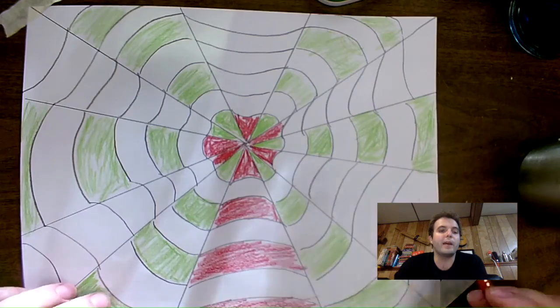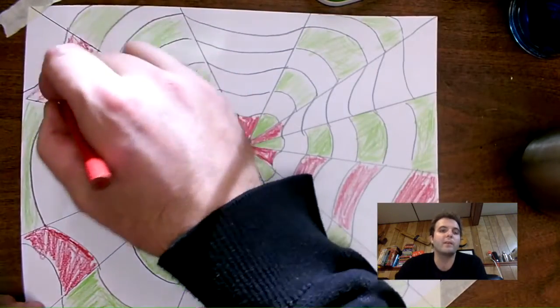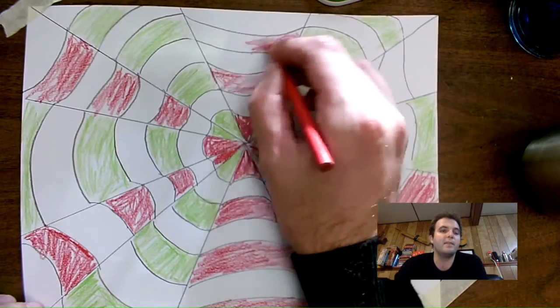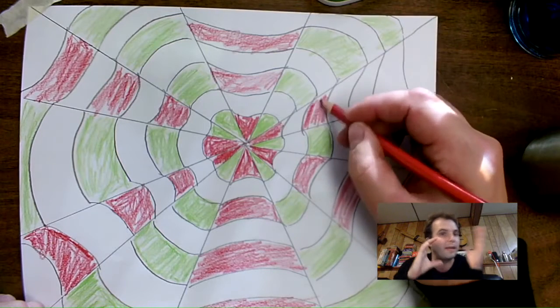And then you do the same thing with the red. Color red, leave a white space, red, leave a white space, red, leave a white space all the way up. Alright, and then you're done your picture and you've got your optical illusion art. It kind of looks like you're going into the picture.